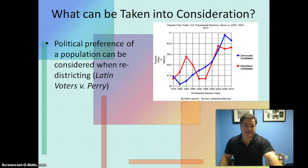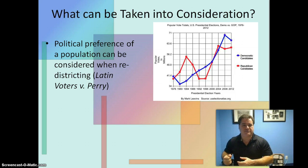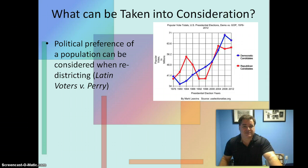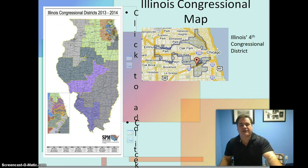Political preference of a population can be considered when redistricting. So you can look at how many Republicans and Democrats live in a congressional district and take that into account when redistricting as a result of a census. You can create a gerrymandered map based on political reasons — where Republicans and Democrats live. Now, the last maps I want you to look at are the congressional maps from Illinois, and I want you to finish the video and answer the last couple of questions on the Google Doc form.